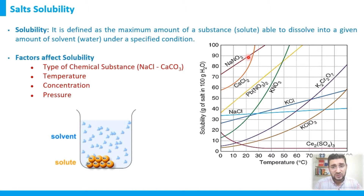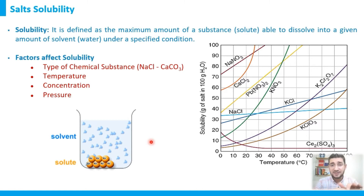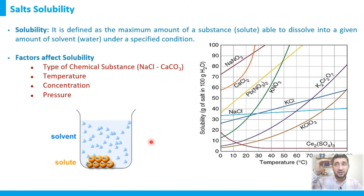The same trend is seen with sodium nitrate, calcium chloride, and lead nitrate. However, there are salts where solubility decreases with higher temperature — for example, cesium sulfate and calcium carbonate, where solubility decreases as temperature increases. So temperature increasing salt solubility is common for many salts, especially group one salts like sodium and potassium, but there is no universal rule.